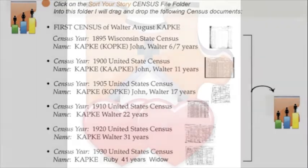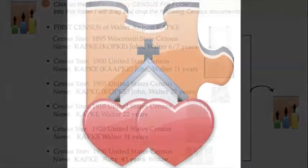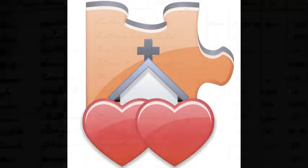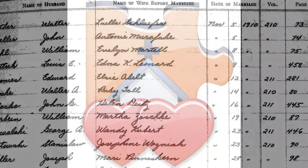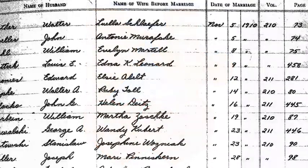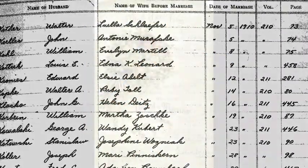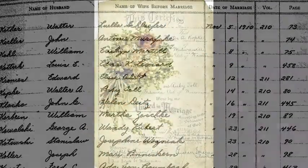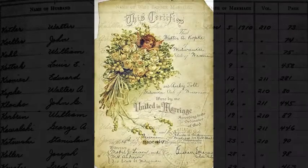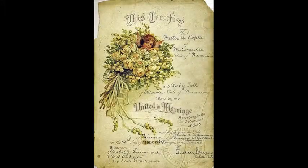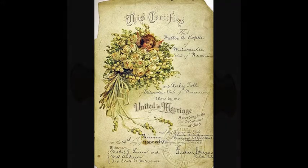Follow along as we add documents to other folders. Into the Church Marriage folder, we drag and drop the registered documents of Walter August Kapke and his wife, Ruby. We'll also drop their marriage certificate onto this folder.